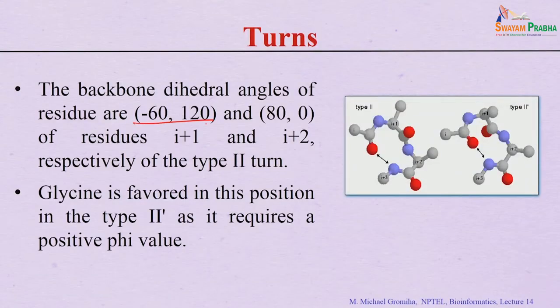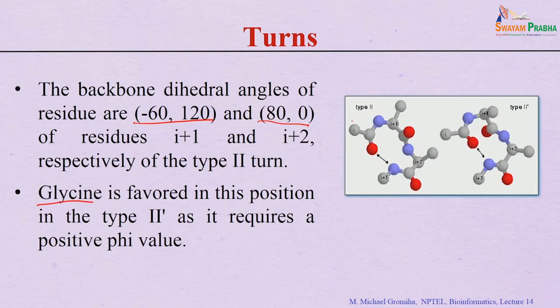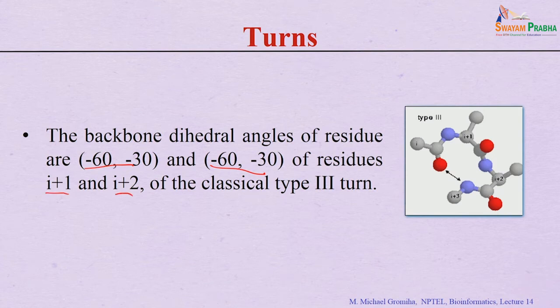In type 2 turns the dihedral angles are −60, 120 and 80, 0 for residues i+1 and i+2, and glycine is the pivot residue. There is also a type 2' variant with negative and positive dihedral angles, so glycine is frequently occurring in type 2 turns. Type 3 turns are not commonly occurring; the backbone dihedral angles are −60, −30 and −60, −30 for residues i+1 and i+2.